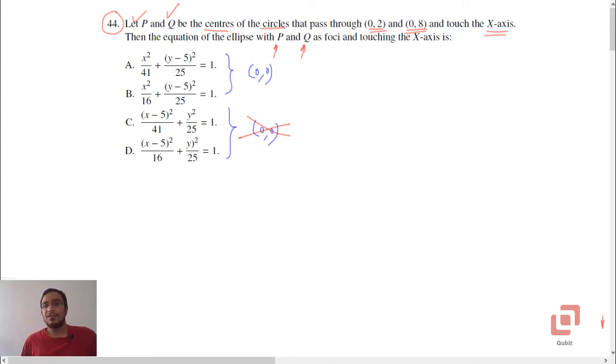But first, we will determine the centers and the radii of our circles whose centers are P and Q, because these centers themselves are actually the foci of the ellipse that we are looking for.